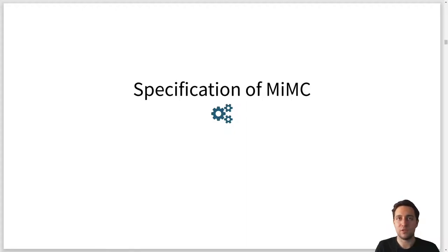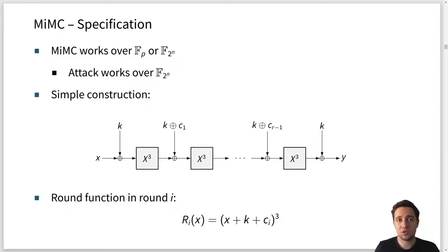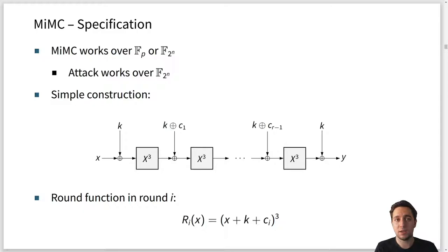Let us start with the specification of MiMC. First, it works over prime fields or binary fields, and it's important to say that this attack works over binary fields only — it does not work over prime fields. With a simple construction, if we want to build a block cipher, we have an input x, we add some key k, we cube the result, we add the key again, we add a random round constant, we cube the result again, and at the end we have the output ciphertext.